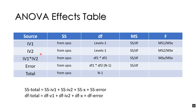For independent variable 2, we get the sum of squares from SPSS. Degrees of freedom are levels minus 1 — the number of levels in factor 2. Mean square is sum of squares divided by degrees of freedom. We then divide by mean square error to get our F value.